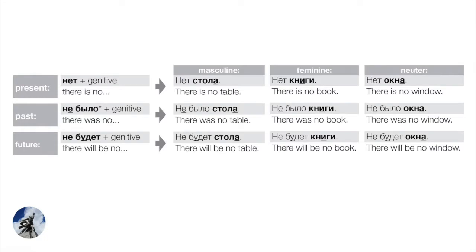Now let's look at the non-existence pattern across three tenses and three genders. But first, the most important thing about this idiom: it is our first example of a subjectless construction in Russian. There is no subject in this construction. To have a subject in Russian you need the nominative case. So if there's no word in the nominative, there's no grammatical subject — we're dealing with a subjectless construction. In Бога нет, Бог is in the genitive, not the nominative — therefore there is no subject.